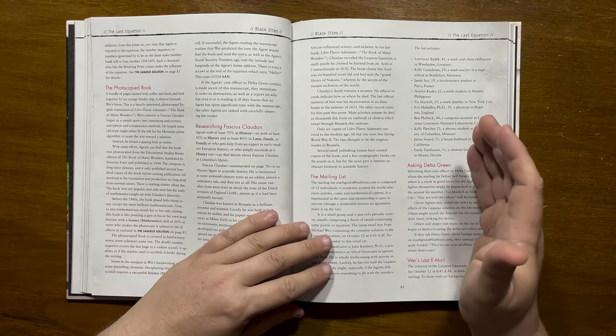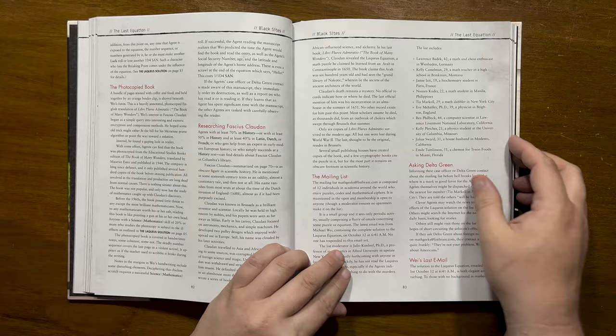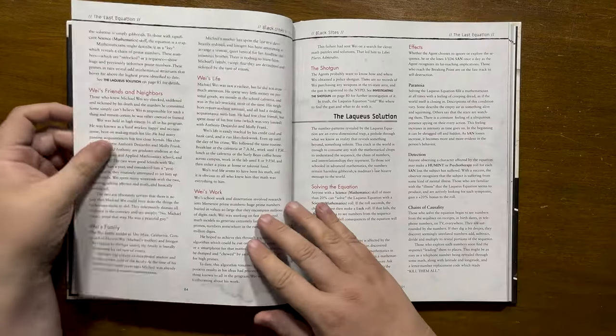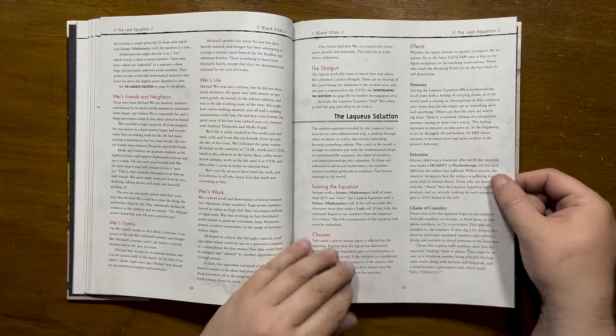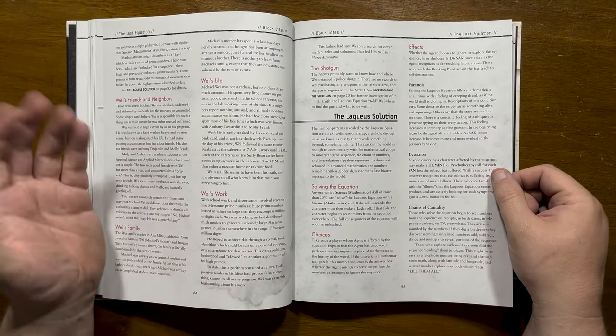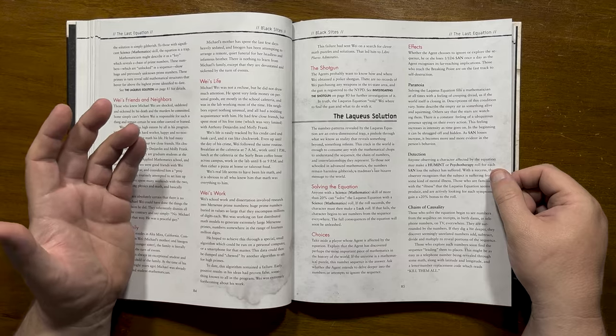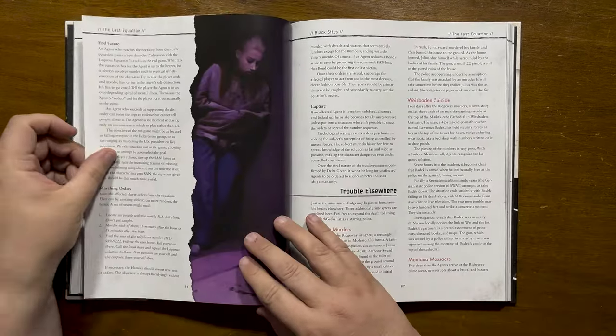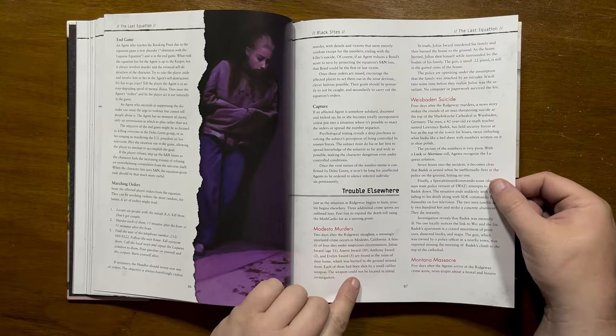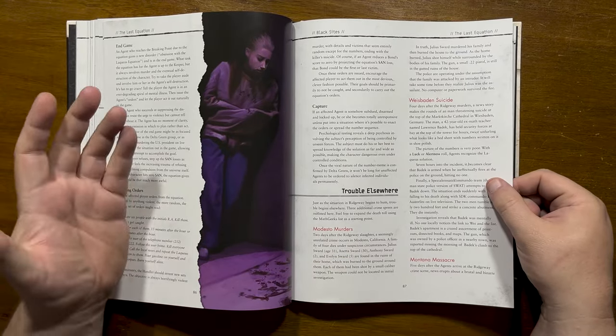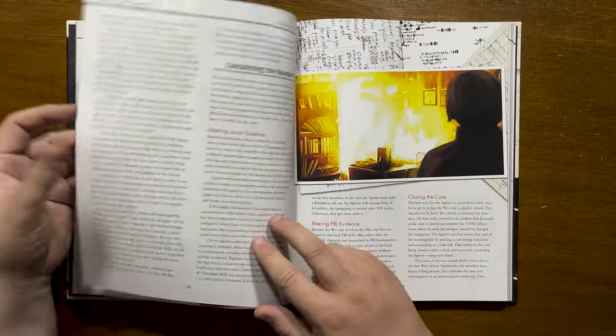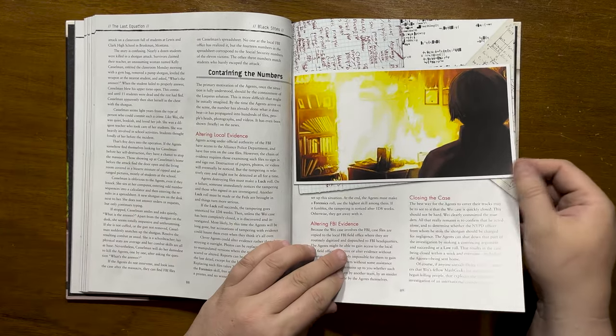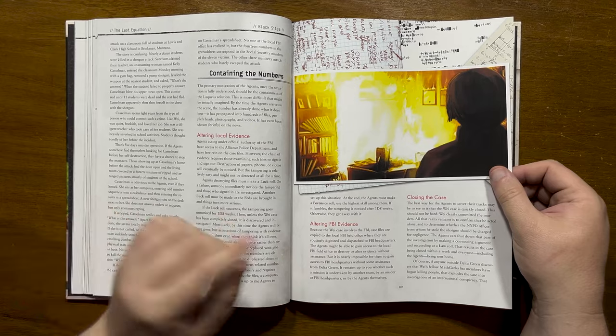After this we have the Laqueous solution itself. Once understood, the numbers seem to be everywhere, telling the victim to kill, burn and destroy seemingly random things. Agents who get to this point are lost and need to be dealt with by Delta Green. Three additional crime scenes are detailed, all recipients of Wei's email. It gives information on how the agents could possibly stop one of these. Ultimately the numbers need to be contained as exposure to the solution causes them to spread. If Delta Green are asked by agents how to deal with the effect, they are told to remove the vector.